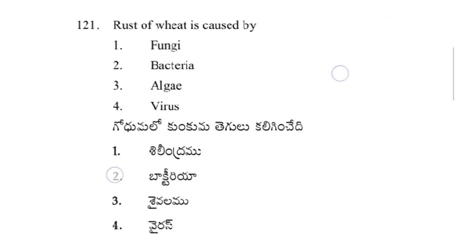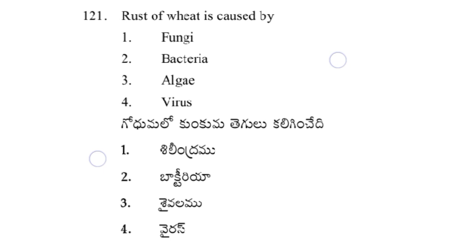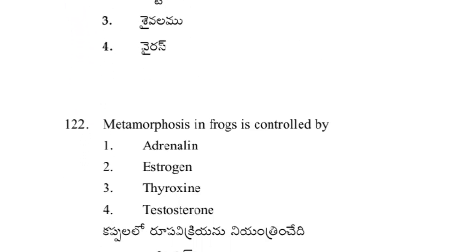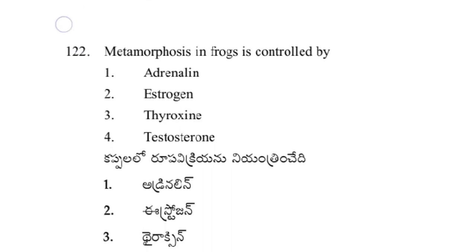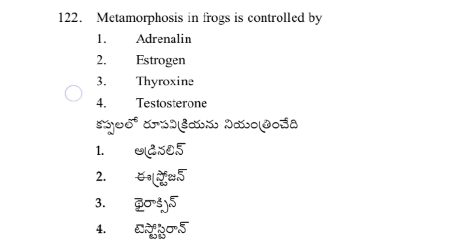Rust of wheat is caused by option 1 — fungi. Metamorphosis in frogs is controlled by option 3 — thyroxine.